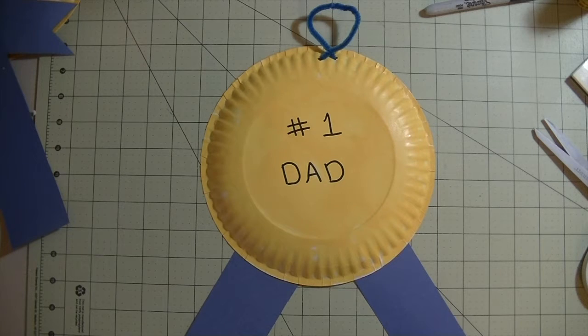Hi guys, it's me Stace. Welcome back to another Toddler Tuesday video. Today's project is super simple - any little one can make it. We are making a number one dad award for Father's Day. Just a paper plate I painted yellow, used a marker for the number one dad, construction paper down here for the ribbon, and a little pipe cleaner hanger.